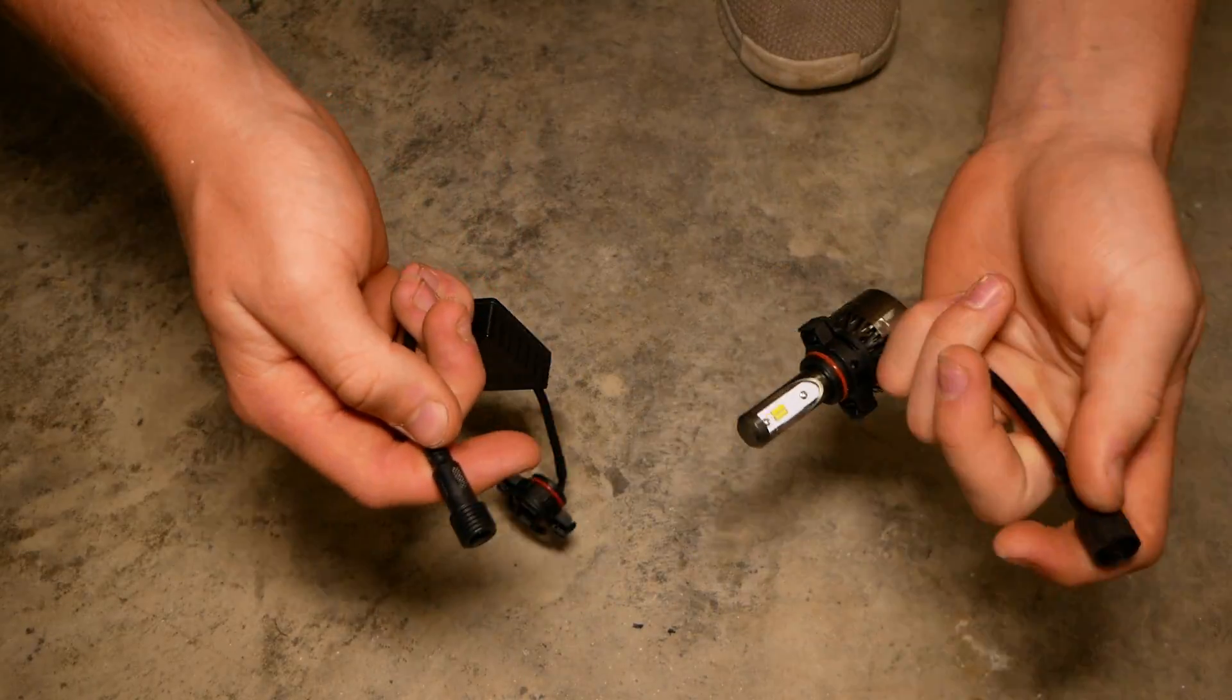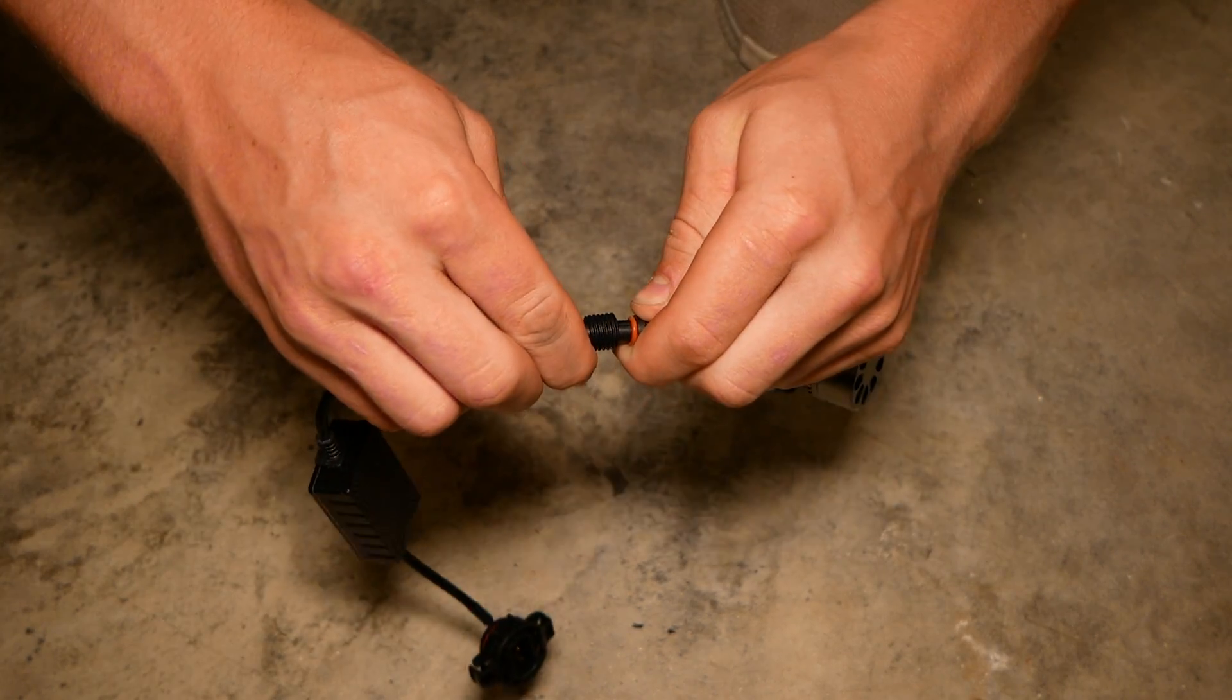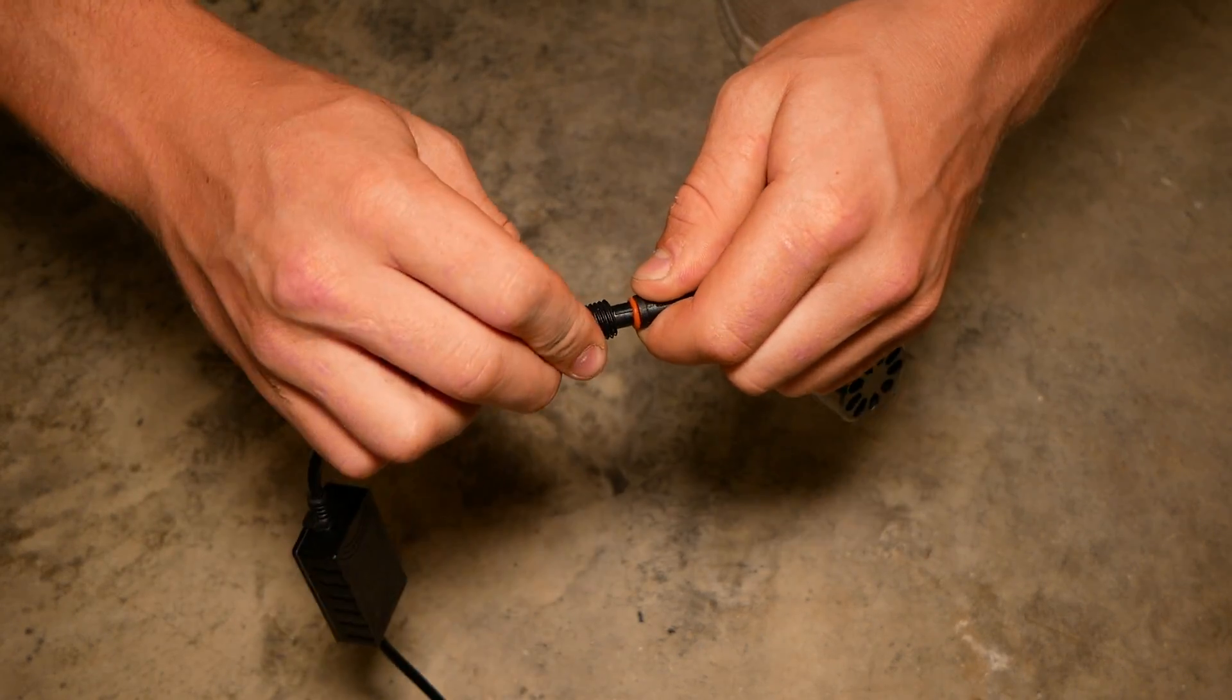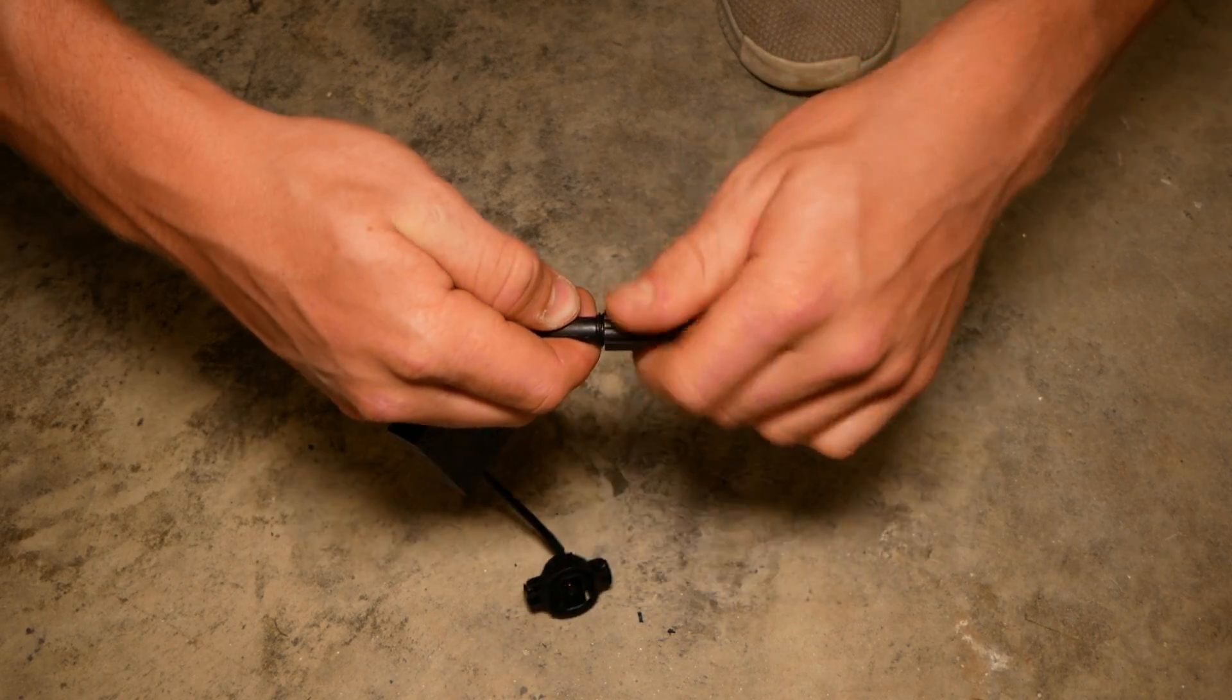To make things as easy as possible it's advisable to screw in your power adapter to the bulb before installing the bulb in the car. There's a little keyed notch that you're going to have to match up on the power adapter here and then you'll screw on the collar to make a water tight fit.